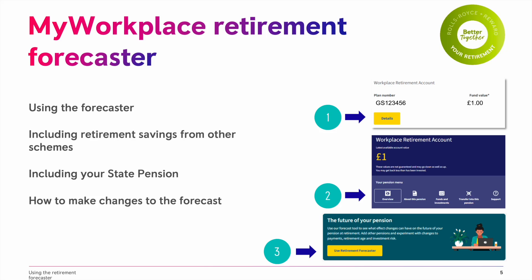The retirement forecaster is easy to find in My Workplace. After logging in, click on Details to get into your account. If you have more than one account, we recommend using your active account as this already knows the current contributions that you and the company are paying. Next, click on Overview, then scroll down to the Future of Your Pension to get started.